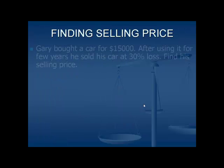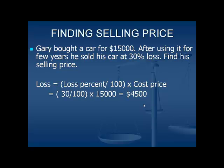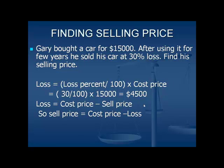Finding selling price. Gary bought a car for $15,000. After using it for a few years, he sold his car at a 30% loss. Find his selling price. The loss is calculated by the loss percent divided by 100, multiplied by the cost price. That is equal to 30 divided by 100, multiplied by $15,000, which equals $4,500. The loss is equal to cost price minus the selling price, so the selling price is equal to cost price minus the loss: $15,000 minus $4,500 equals $10,500.